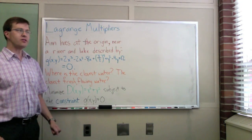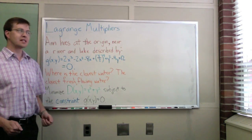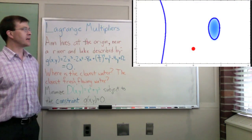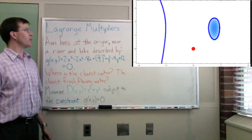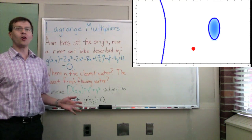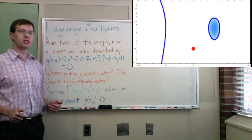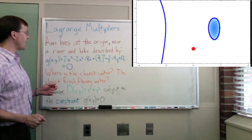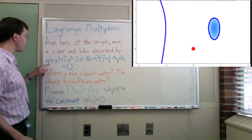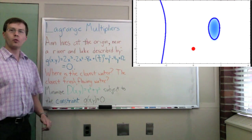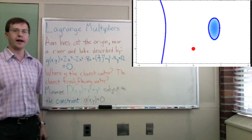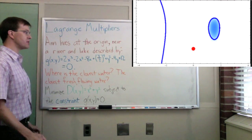Ann lives at a house at the origin of coordinates near a river and a lake. And I will put up here a nice little picture of Ann's house as a red dot and the river and the lake. And by a crazy coincidence, if Ann's house is the origin of coordinates, then the river and the lake happen to be described, their borders happen to be described by the function g of xy equals zero.